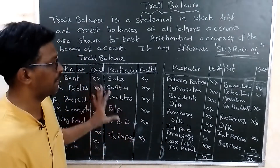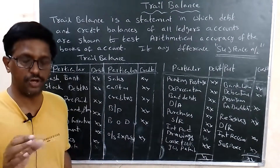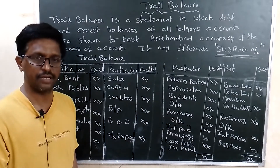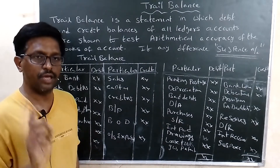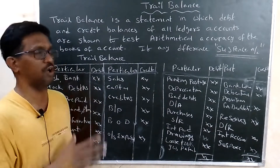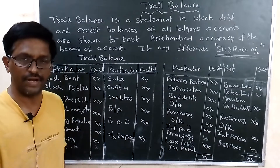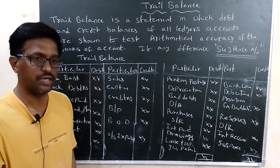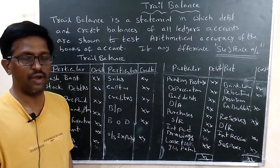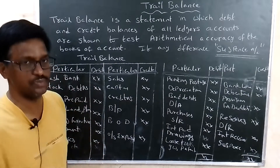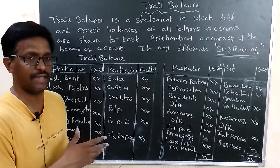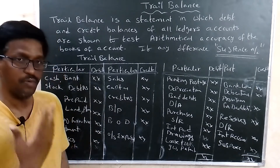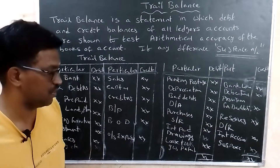This is the trial balance format. You should remember what items go on the debit side and what items go on the credit side. If you keep these items in mind, problems will be easily solved. This topic may come for two marks at intermediate level, ten marks for degree students, and one to two marks in CA foundation and CMA foundation. Trial balance is very important for preparing final accounts in business.